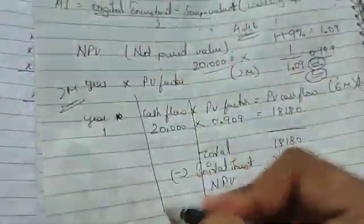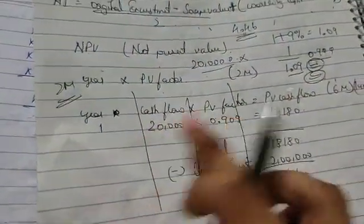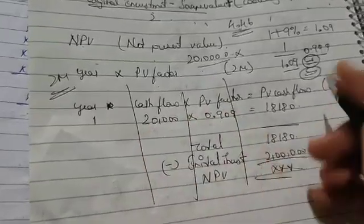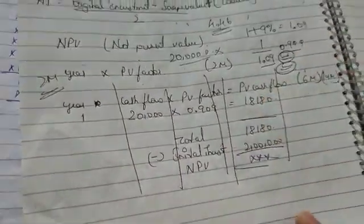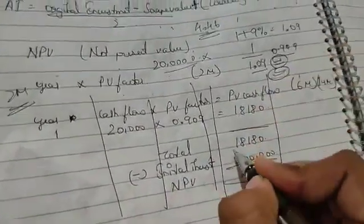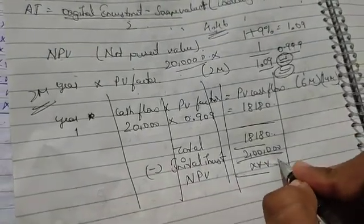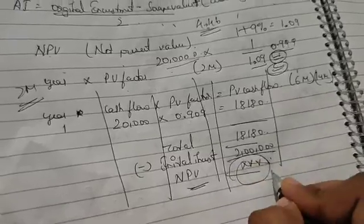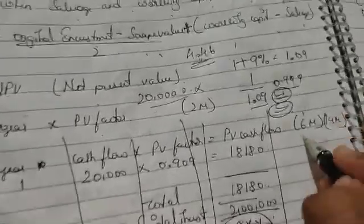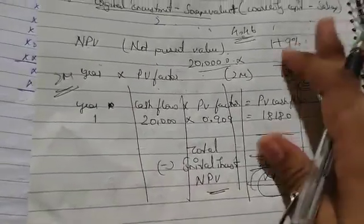In the NPV table, multiply all the cash flow amounts by their PV factors to get the PV cash flow column, then total it up. Subtract the original investment from that total to get the NPV. This format applies for six marks and possibly 14 marks questions.